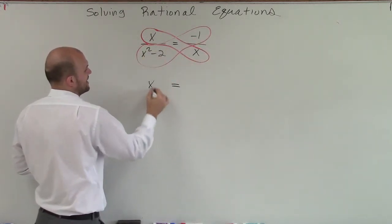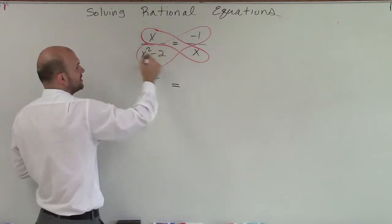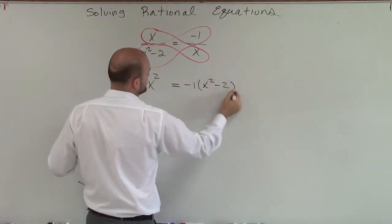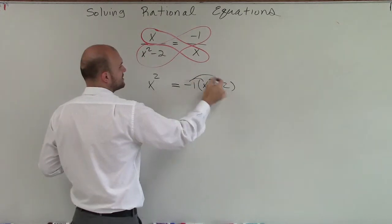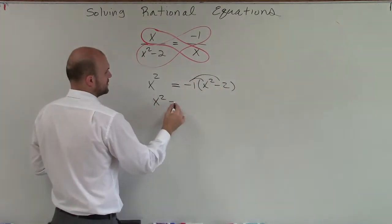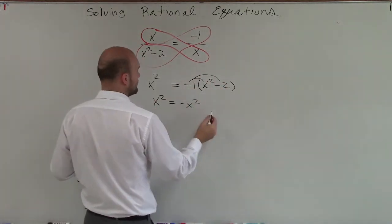So x times x is going to be x squared. Then over here, I have negative 1 times x squared minus 2. Now I can apply my distributive property, so I'm left with x squared equals negative x squared plus 2.